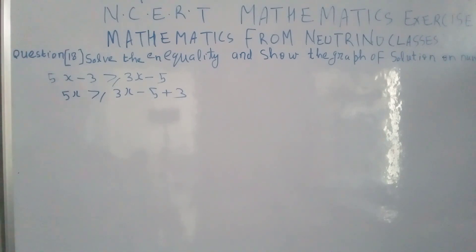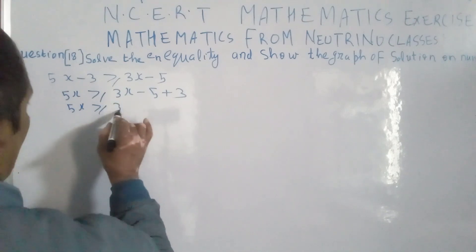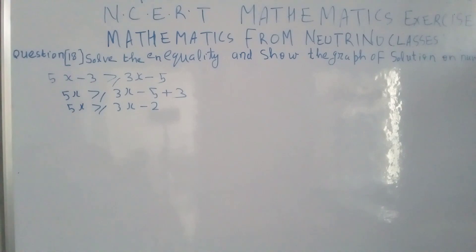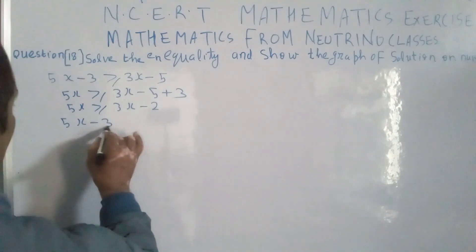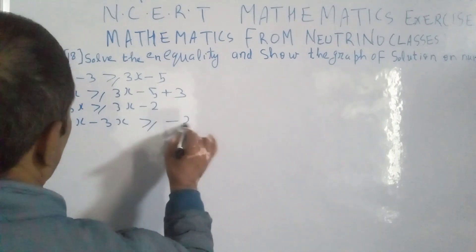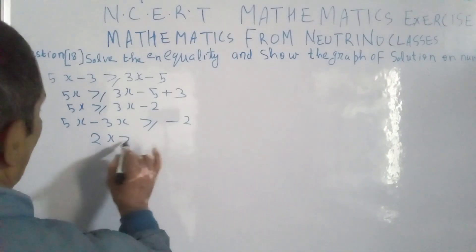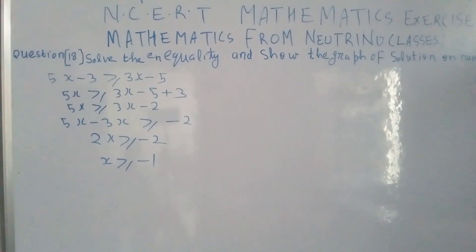So this becomes 5x is greater than or equal to 3x minus 2. Now we take 3x to the left side, which becomes minus 3x. So 5x minus 3x gives us 2x, and 2x is greater than or equal to minus 2. Dividing both sides by 2, x is greater than or equal to minus 1.